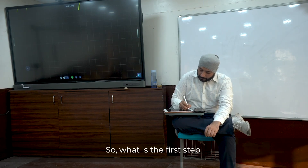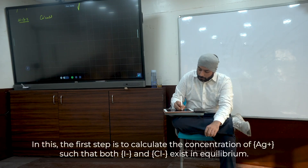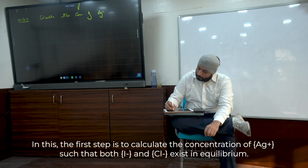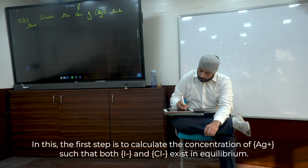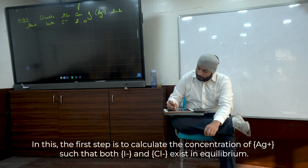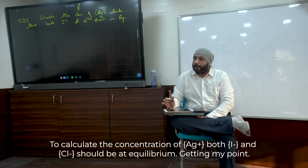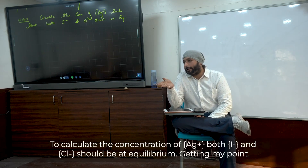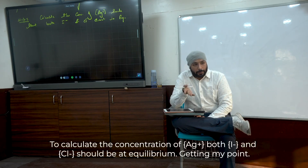Step 1: Calculate the concentration of Ag⁺ such that both I⁻ and Cl⁻ exist in equilibrium. So we need the Ag⁺ concentration at which both I⁻ and Cl⁻ are at equilibrium.